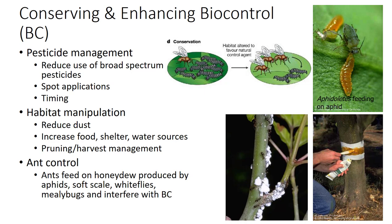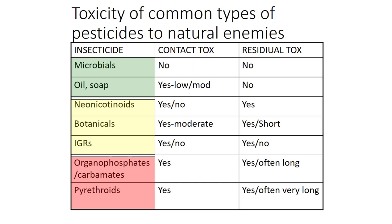Ants feed on the honeydew and disrupt biological control by attacking their predators and parasites. It may be necessary to control these ants by pruning branches to deny them access to plant canopies or by applying a sticky material to tree trunks. In this table, you can see the toxicity of common types of pesticides to natural enemies. It is divided into green pesticides, including the microbials and soaps and oils, which have no or low contact toxicity and no residual toxicity.